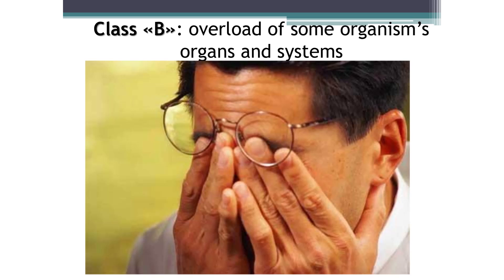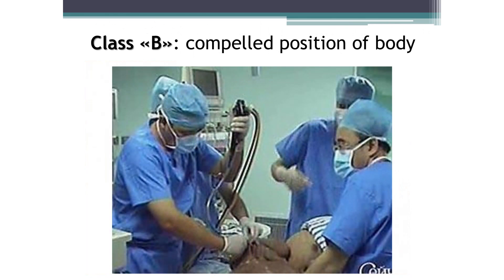Therefore, the doctor needs to protect his eyes, limit working with a computer and watching TV where possible, and do special exercises to strengthen vision. Another problem is the forced position of the body — most typical for a surgeon who must stand next to the operating table for a long time in an uncomfortable position. This leads to disrupted blood supply to the legs, varicose veins, and problems with the spine, including a high risk of osteochondrosis. To prevent this, it is necessary to find time for breaks and rest; swimming and other sports are very helpful.